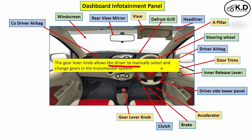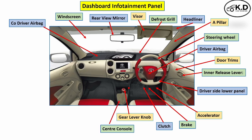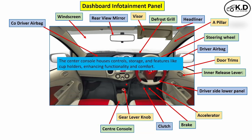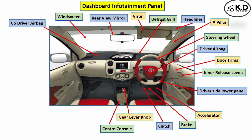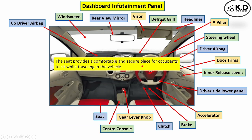The next part is the central console. The central console housing covers the structural part and provides comfort, aesthetics, and storage such as a cup holder, armrest, and other connectivity devices. The next part is the seat, which allows comfort, folding, and space while traveling for the occupant.